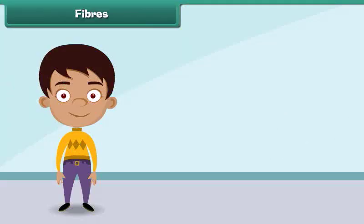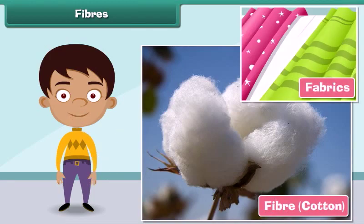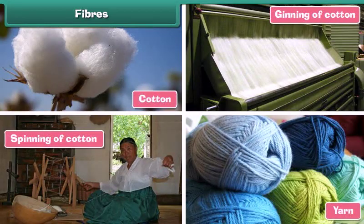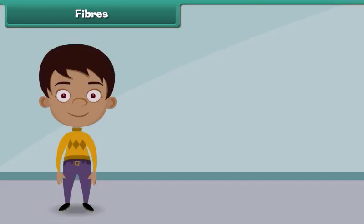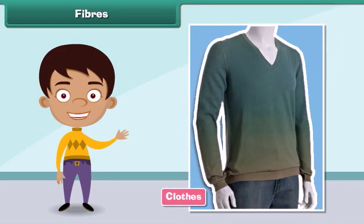Fibers are the raw material used in manufacturing clothes. Fibers are transformed into clothes through a series of steps. First, raw fibers are twisted together to form long strands of threads known as yarns. The yarns are then woven and knitted to form fabrics, which are finally used to make clothes of different sizes and shapes.